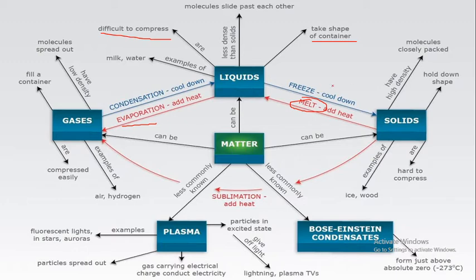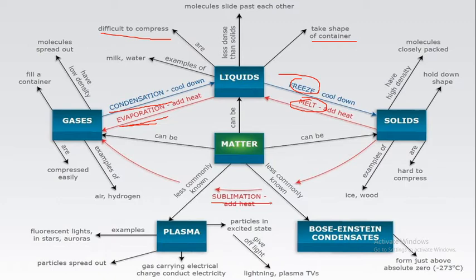Solids convert into liquids — that process is called melting. Liquids can be converted into solids by the process called freezing. Liquids can be converted into gases by the process called evaporation or boiling. In reverse, gases can be converted into liquids by the process called condensation. Some solids directly convert into the gaseous state — that is called sublimation. Based on all these concepts, we are going to do this practice sheet.